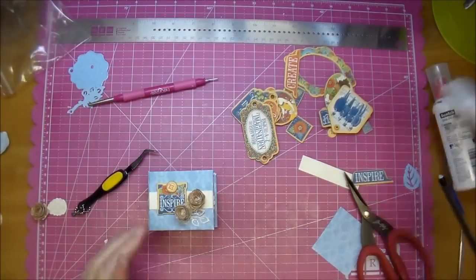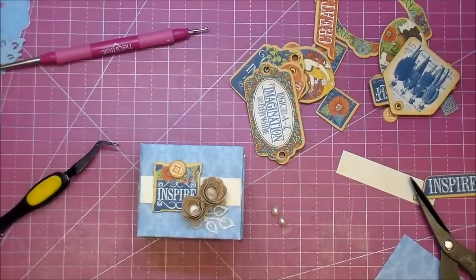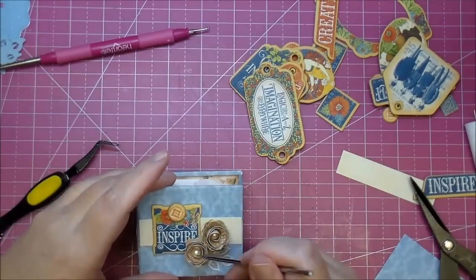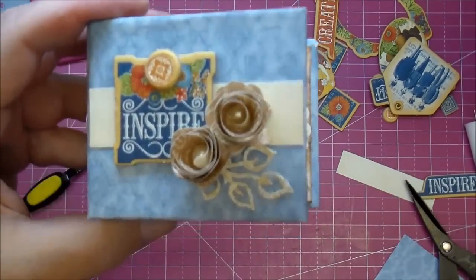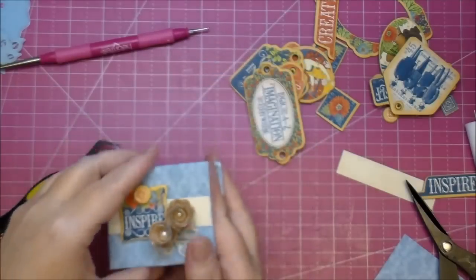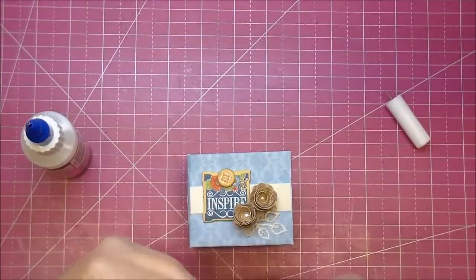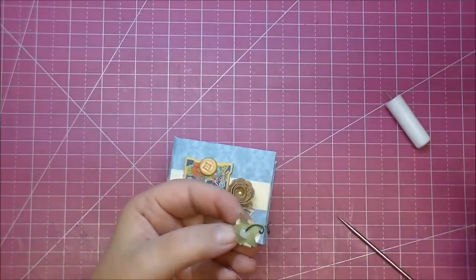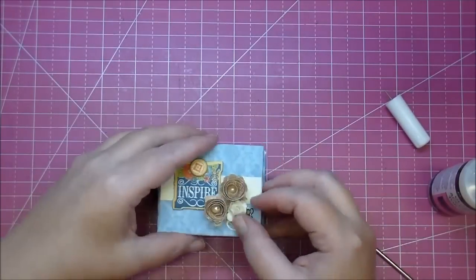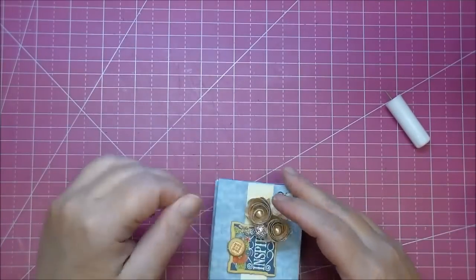So now I'm adding my rolled flowers and some glossy accents to the center and some little pearls, round pearls to the center of those little rolled flowers. They're so cute, so easy to make. And now I'm just going to again use some glossy accents, add a little white flower and also a glitter ball, which are my favorite to use on projects from Wilder Crafts. Again using some glossy accents and that finishes off my little album.